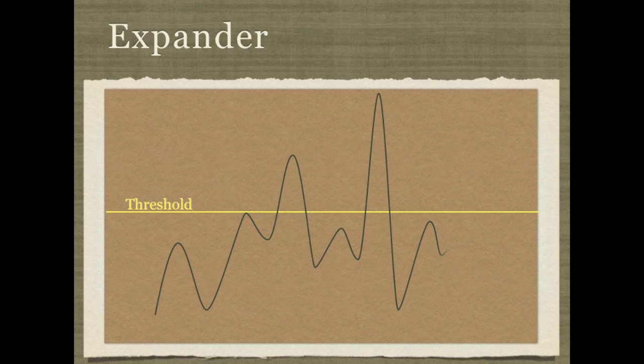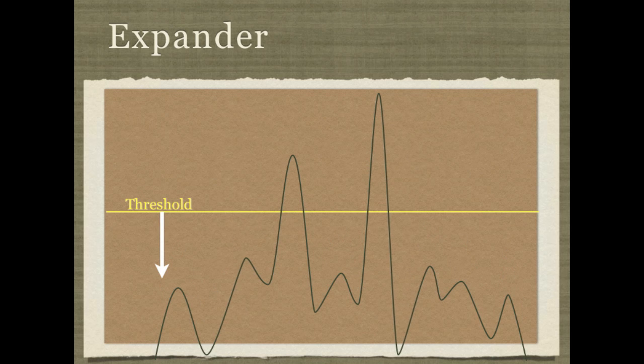With the expander, though, instead of turning down the signal when it goes above the threshold, we turn down the signal when it goes below the threshold. Let's look at an example of where this is useful.